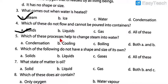Next one: which of these processes helps to change steam into water? Condensation, cooling, boiling, or both A and B. Those who have understood the chapter properly have already taken the correct answer. The correct answer is condensation — option A.